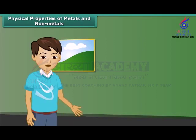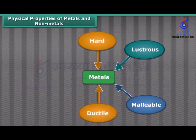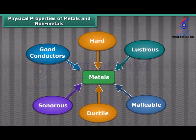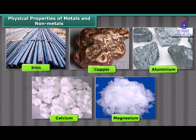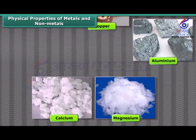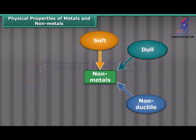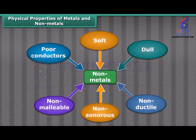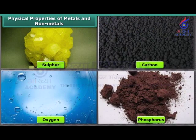So friends, by these properties we can say that metals are hard, lustrous, malleable, ductile, sonorous, and good conductors of heat and electricity. Iron, copper, aluminium, calcium, magnesium, etc. are the examples of metals. Non-metals like coal and sulfur are soft, dull, non-ductile, non-sonorous, non-malleable, and poor conductors of heat and electricity. Sulfur, carbon, oxygen, phosphorus, etc. are the examples of non-metals.